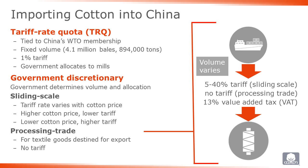Processing trade quota is issued in the case when cotton fiber imports are tied to the export of downstream textile goods, like apparel. If a mill is export-oriented, they may receive processing trade quota from the government. Processing trade quota is not assessed any duty.